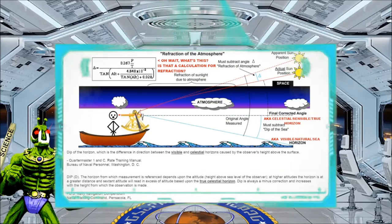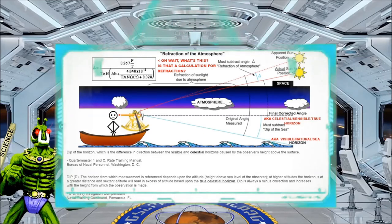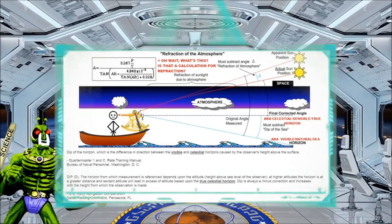Ah yeah, refraction. Yeah well, that absolutely kills the notion that we can use a sextant. As we can see, refraction is clearly accounted for. So what does Stickman have to say about the horizon?